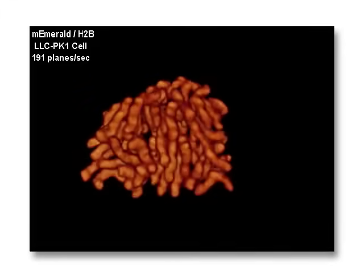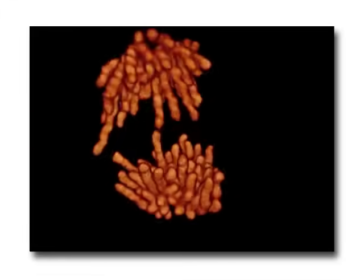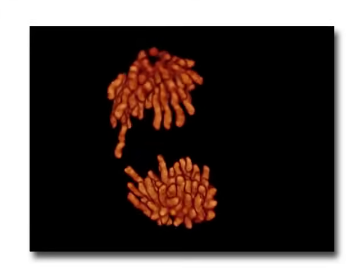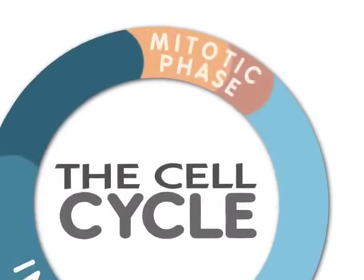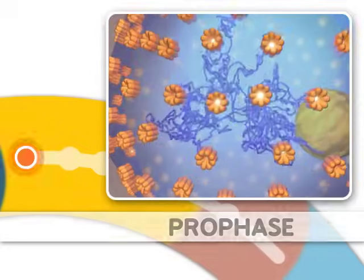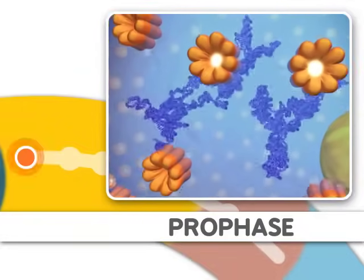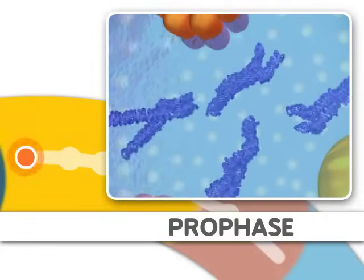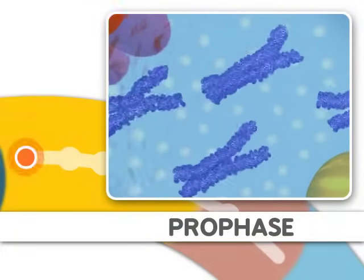Mitosis is the process of dividing the duplicated DNA of a cell into two new nuclei. Mitosis is split into distinct stages. The first stage is prophase, where the DNA condenses, organizes, and the classic chromosome structure appears.